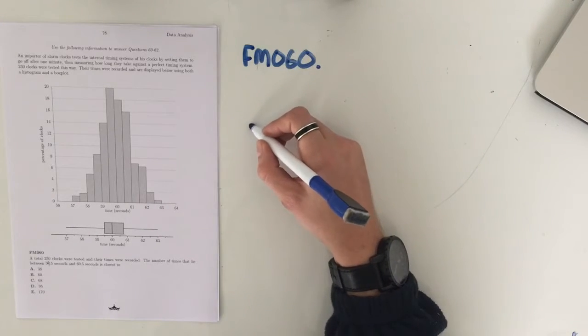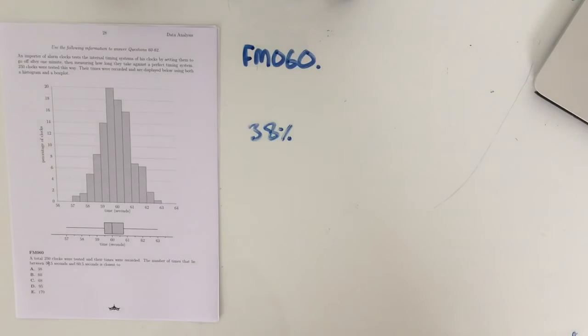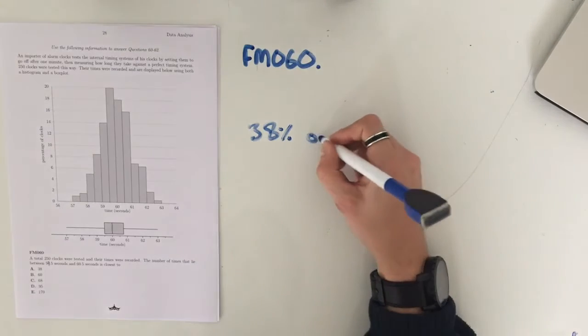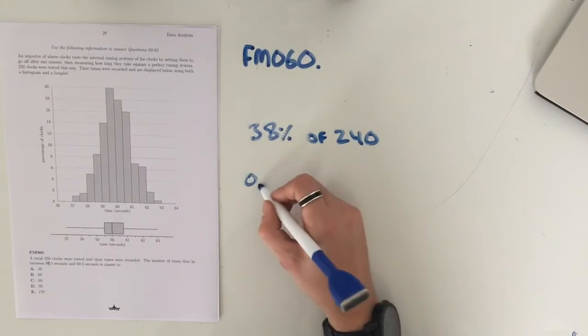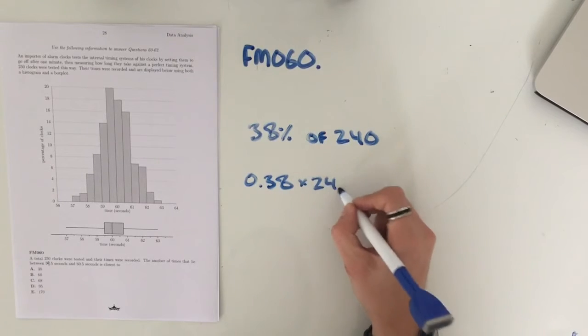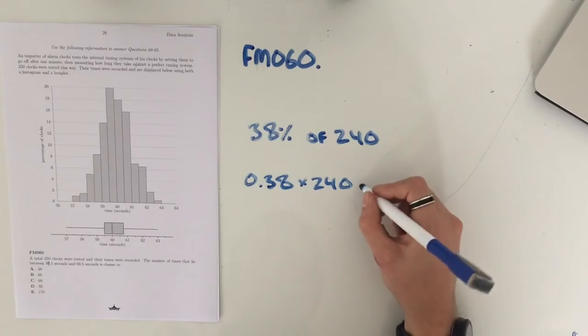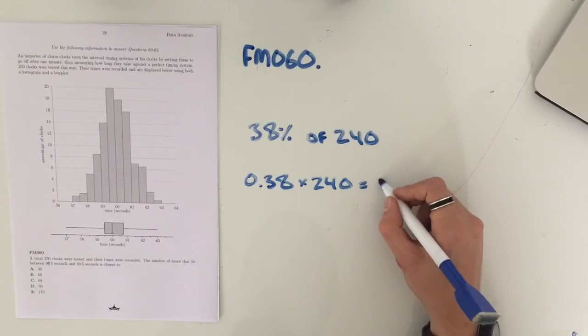which means that 38% of our clocks fall within that range. Now, we have to find out what 38% of 240 is. Not too difficult. Convert that percentage to a decimal, 0.38 times 240. And that's going to give us a value of 95.